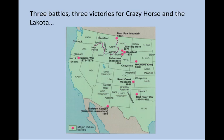Three battles, three victories for Crazy Horse and the Lakota: the Fetterman Massacre in 1866, then about a decade later the Battle of the Rosebud, and shortly after that the most famous of the three — the Battle of the Little Bighorn. You also see other conflicts of the age, including the Sand Creek Massacre during the U.S. Civil War, where Colorado militiamen basically set upon civilian people — unarmed women and children — massacring and mutilating bodies. History had set in motion events that would bring Crazy Horse and the Lakota to their greatest victory.